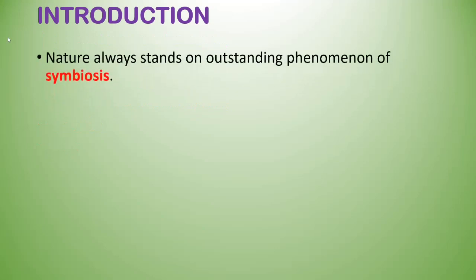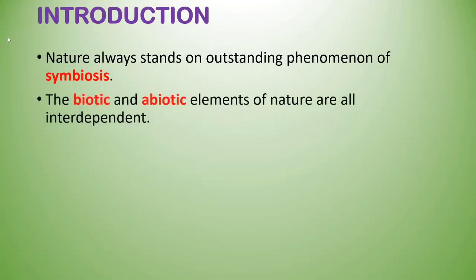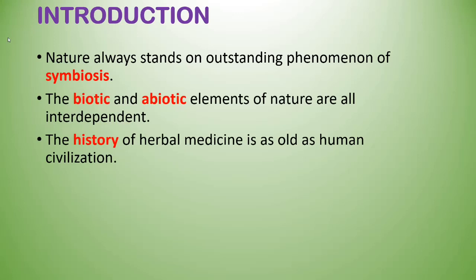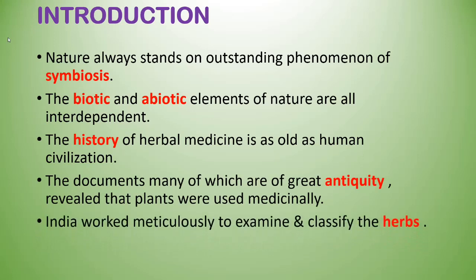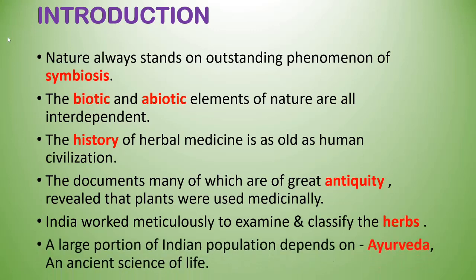In the introduction of pharmacognosy, nature always stands on outstanding phenomena of symbiosis — the biotic and abiotic elements of nature are interdependent on each other. The history of herbal medicine is as old as human civilization. Documents of great antiquity reveal that plants were used medicinally. India worked meticulously to examine and classify herbs, along with China and other countries. A large portion of the Indian population depends on Ayurveda, the ancient science of life, which generally depends on crude drugs, that is herbs.